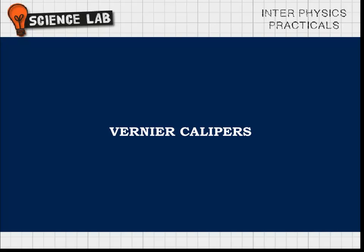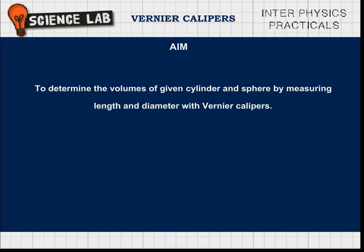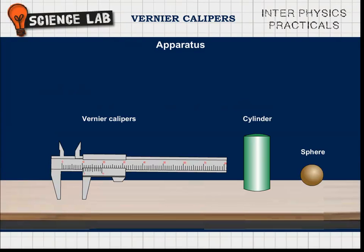Vernier Calipers. Aim: To determine the volumes of a given cylinder and sphere by measuring length and diameter with vernier calipers. Apparatus: Vernier calipers, cylinder and sphere.